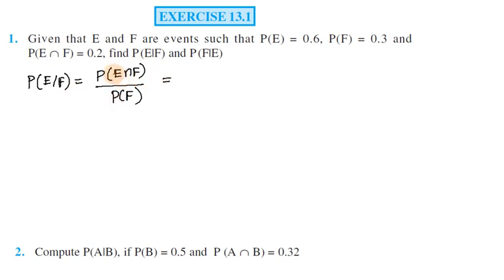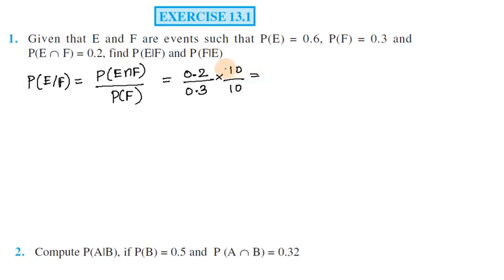P(E∩F) equals 0.2, divided by P(F) equals 0.3. To simplify the decimals, we multiply and divide by 10, moving the decimal point one digit to the right. This gives us 2 divided by 3, so P(E|F) = 2/3.